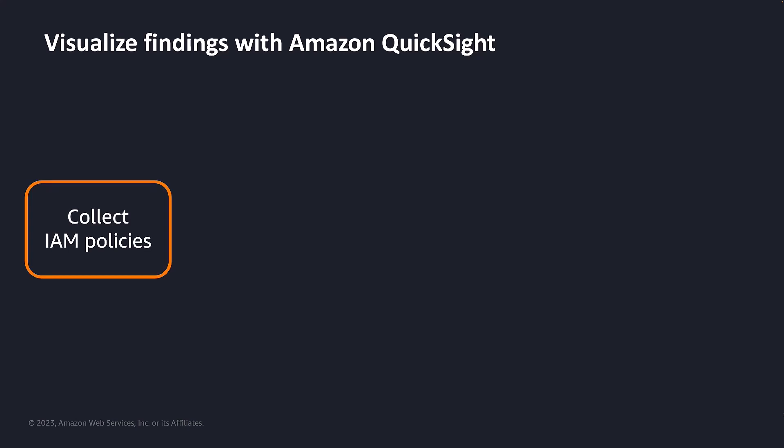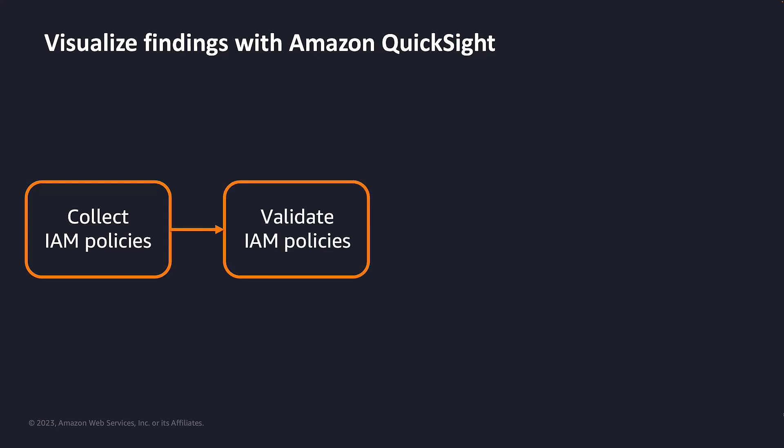First, we need to collect inline and customer-managed IAM policies from all the accounts in your AWS organization and send them to the central hub account, usually a security tooling account. Second, we'd like to run IAM Access Analyzer Validate Policy API call on each policy we collected. The API call returns a list of findings. You will use these findings to identify and correct the issues in your policies and to author functional policies that meet security best practices. The findings will be stored in an S3 bucket belonging to the hub account.